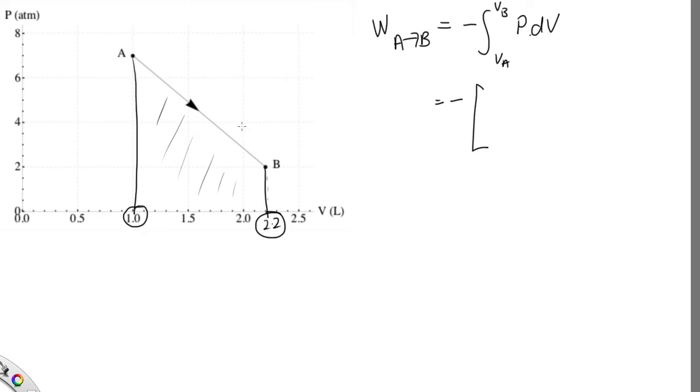So minus, and to work out the height for a trapezium, we can just take the average height. It's going from 7 atmospheres down to 2 atmospheres. So 7 plus 2 over 2 times 1.01 times 10 to the 5. This number here is to get it into pascals, the standard units for pressure.